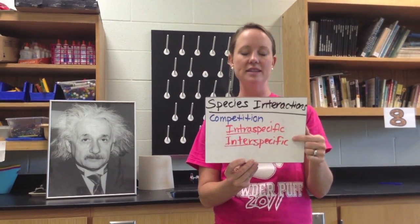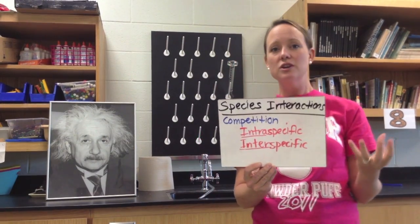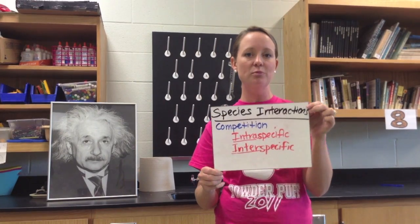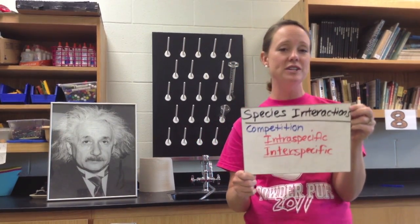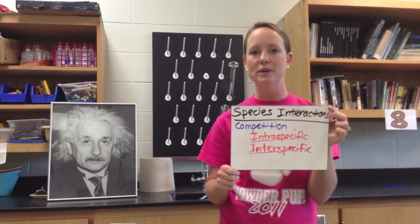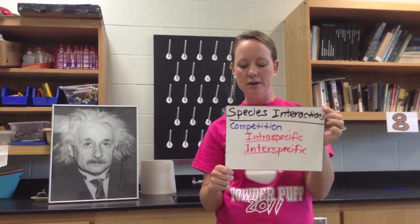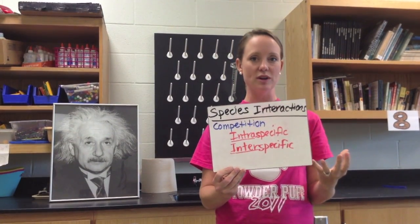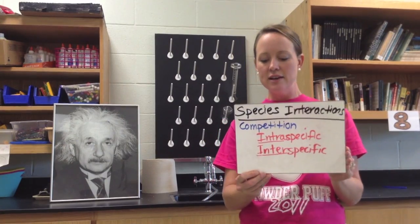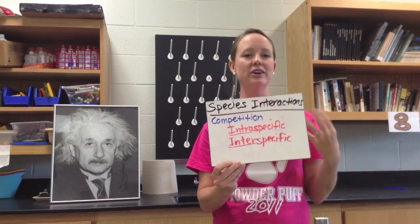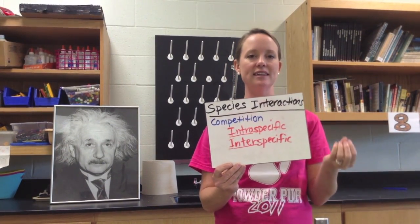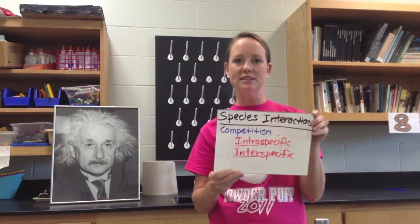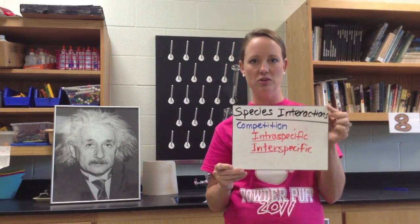Interspecific is competition between two or more different species. For example, in a forest, plants compete for light. The trees are usually going to out-compete the smaller plants. One adaptation certain species have in a deciduous forest — where the trees lose their leaves — is coming out in early spring to get sunlight when there are no leaves. Snowdrops and primroses are two examples of flowering plants that have an early spring life cycle.